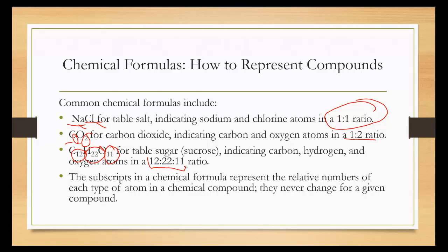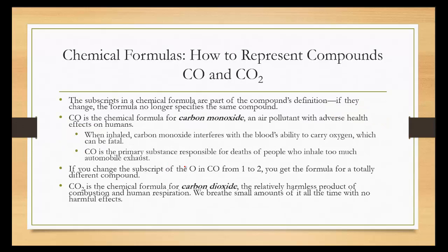The subscripts of chemical formulas represent the relative numbers of each type of atom in a chemical compound. They never change for a given compound. So sucrose will always be C12H22O11, no matter what. The subscripts of a chemical formula are part of the compound's definition. If they change, the formula no longer specifies the same compound.